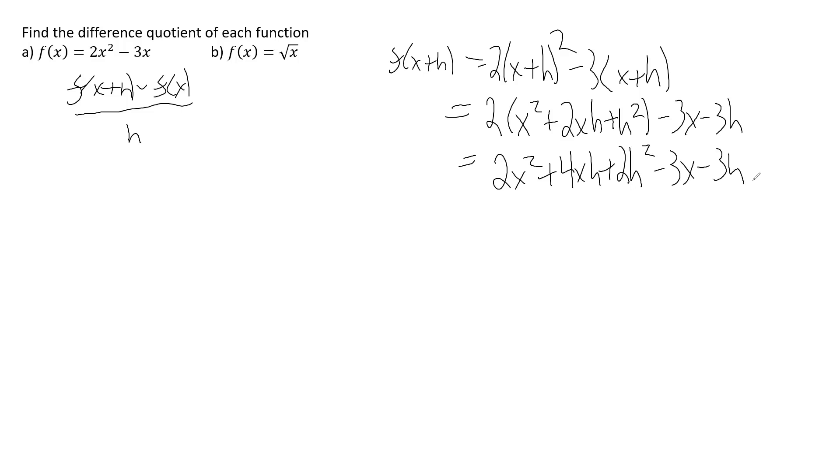All right, at this point there are no like terms that combine, so this just gives us the f of x plus h part. So we have 2x squared plus 4xh plus 2h squared minus 3x minus 3h minus the f of x function, which is 2x squared minus 3x.